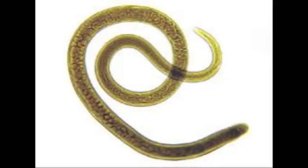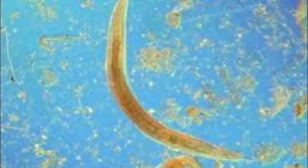Nematodes are also known as roundworms. They are eukaryotic and multicellular. They are heterotrophic, which means they have to find their own food. Their diet consists of plants, fungi, algae, bacteria, and other nematodes.